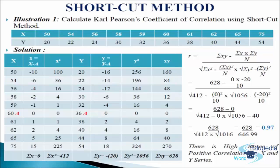In the last column we will write the product of x and y: minus 10 into minus 16 comes 160, minus 6 into minus 14 comes 84, minus 4 into minus 12 comes 48, minus 2 into minus 6 comes 12, minus 1 into minus 4 comes 4, 0 into 0 comes 0, 1 into 2 comes 2, 2 into 4 comes 8, 5 into 8 comes 40, and 15 into 18 comes 270. We will add up the values and get sigma xy equals to 628.